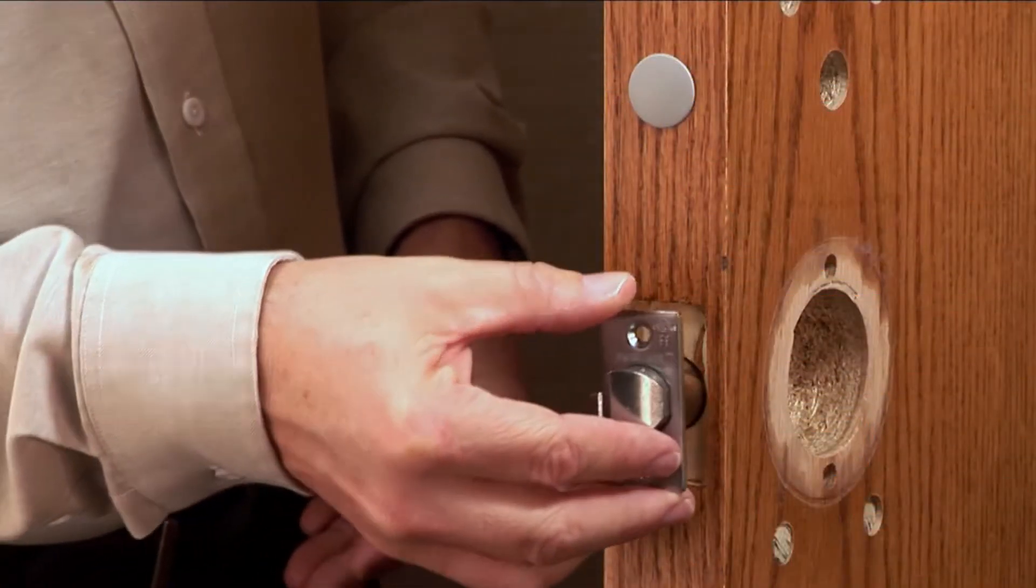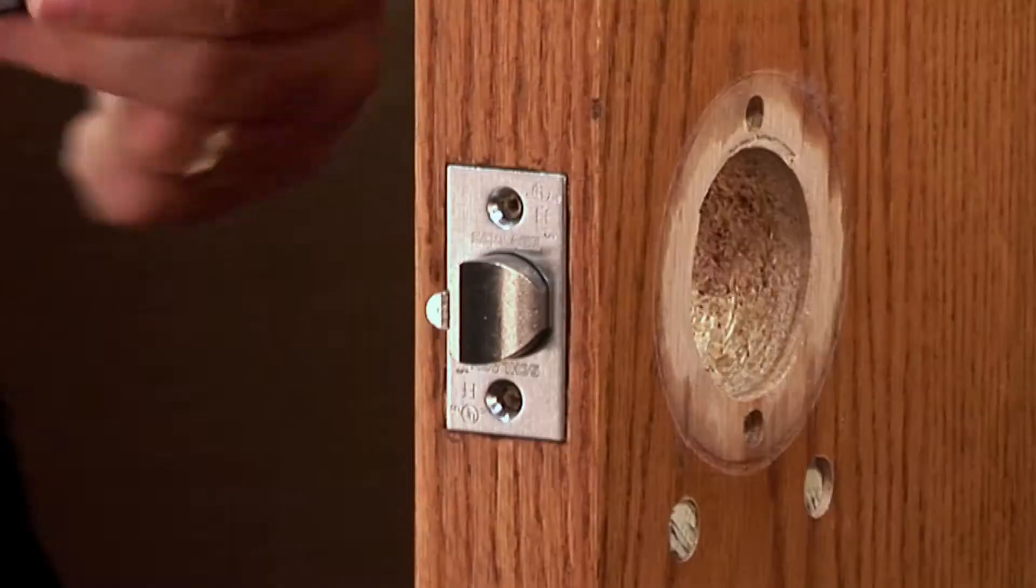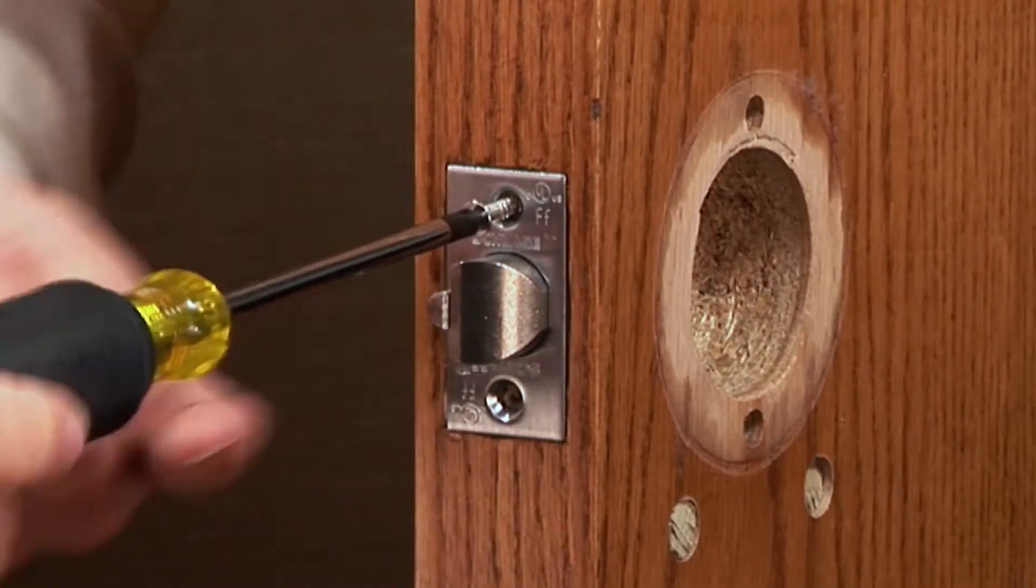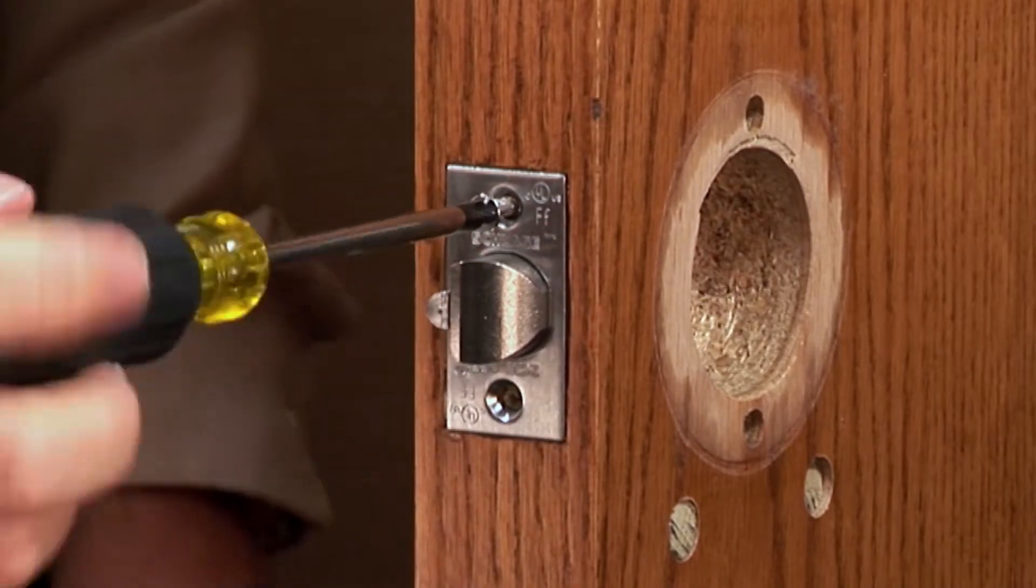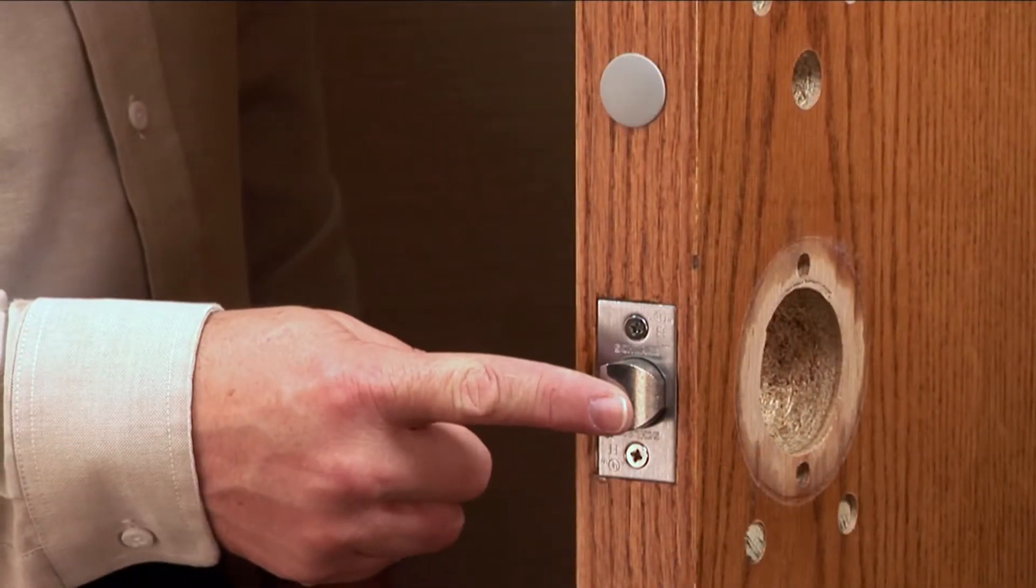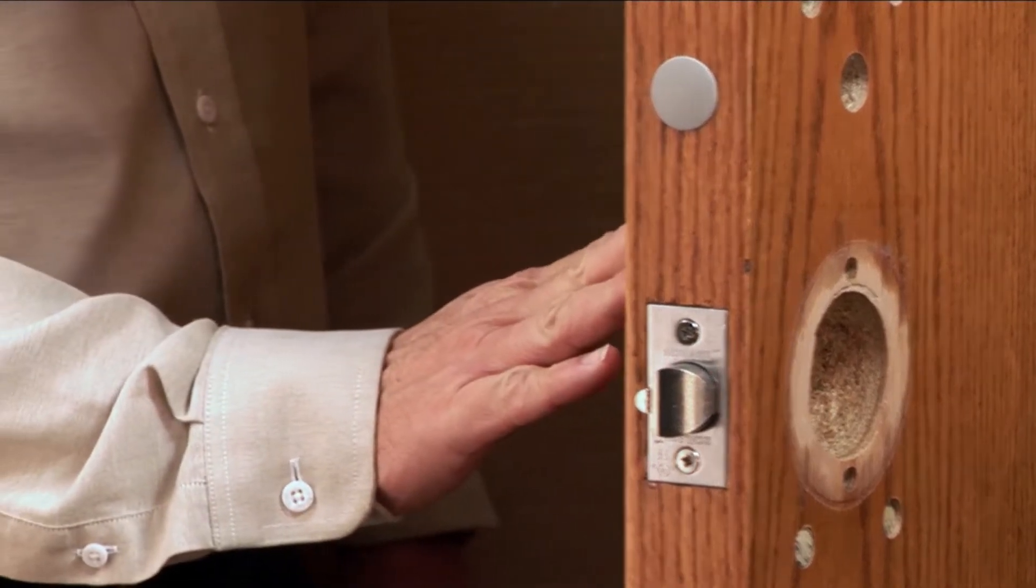Next, install the latch by placing it into the door and securing it with two screws. Ensure the bevel of the latch is appropriate for the swing of the door.